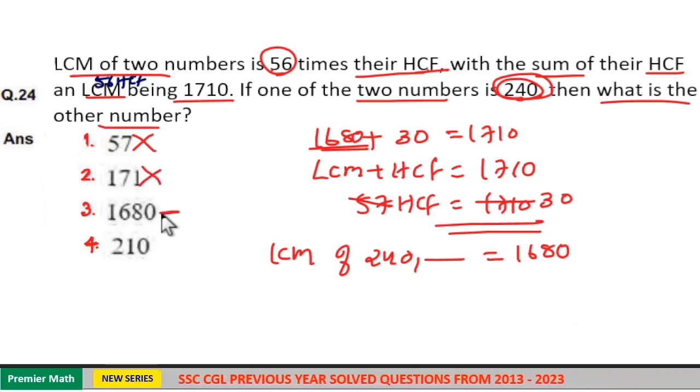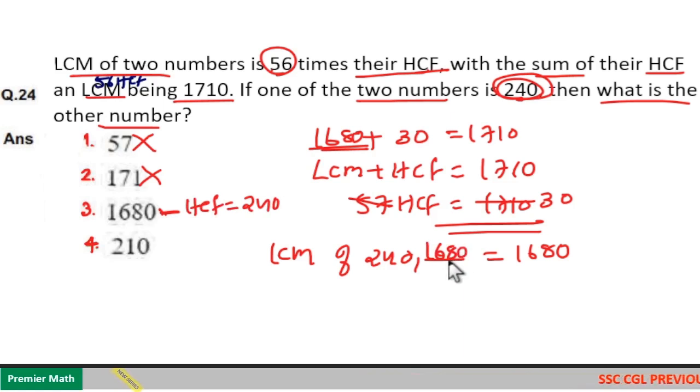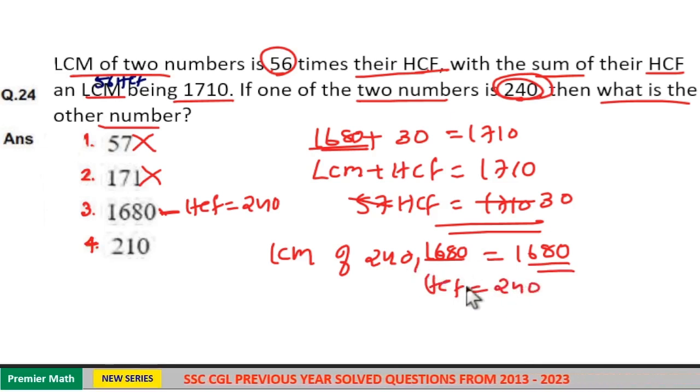Here if you check 1680, its HCF with 240, the LCM of 1680 and 240 is 1680. If you take HCF of these two numbers, it is 240 because 240 goes 7 times in 1680.